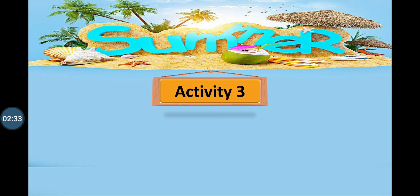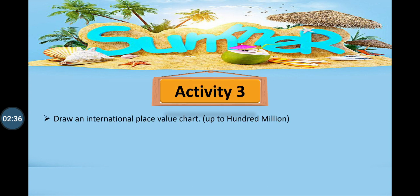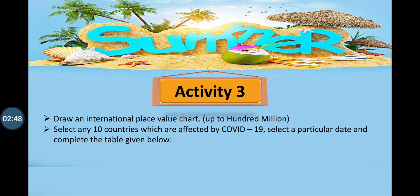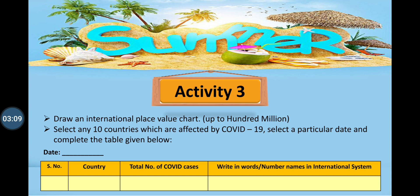In the third activity, you can use A4 size paper — it can be white or colourful. You have to draw an international place value chart up to 100 million, and then you have to select any 10 countries which are affected by COVID-19. You can select any particular date and check how many cases of COVID-19 were there on that date. You have to write down the total number of COVID cases of each country in the table given below.